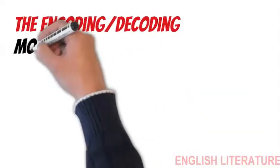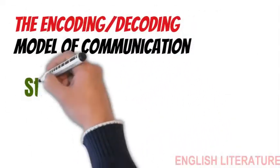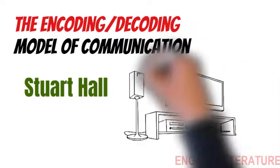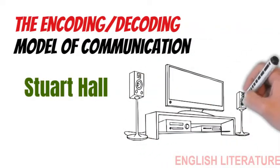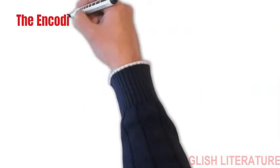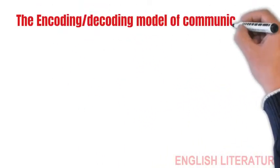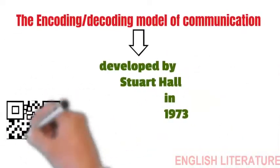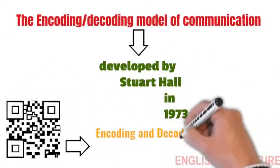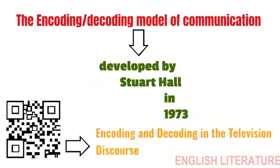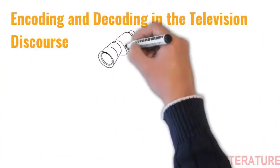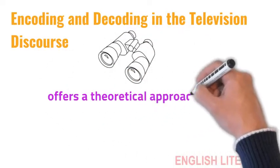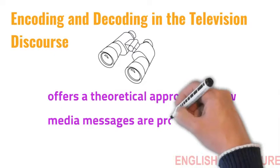Encoding-Decoding by Stuart Hall. The Encoding-Decoding model of communication was first developed by cultural studies scholar Stuart Hall in 1973. He discussed this model of communication in an essay entitled Encoding and Decoding in the Television Discourse. Hall's essay offers a theoretical approach of how media messages are produced, disseminated and interpreted.